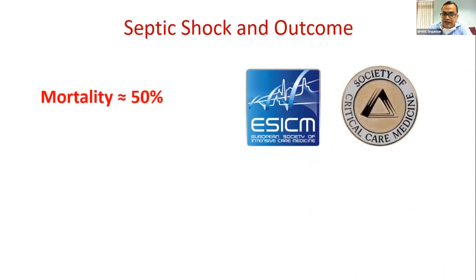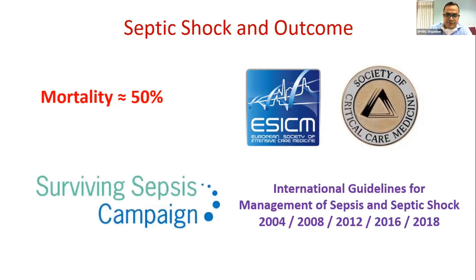There are two important international societies that regularly publish definitions, evidence, and recommendations: the Society of Critical Care Medicine from the US and the European Society of Intensive Care Medicine from Europe. Together they gave the name 'Surviving Sepsis Campaign,' and from 2004 onward they periodically release new guidelines approximately every four years.